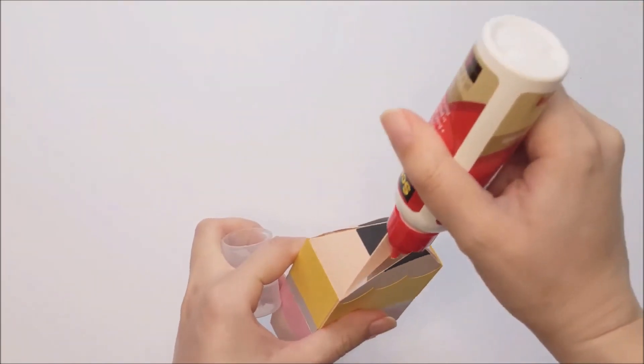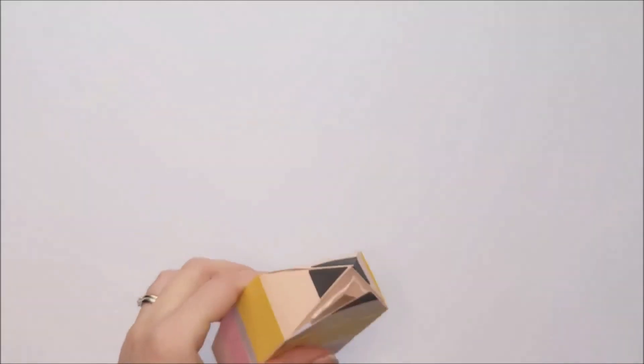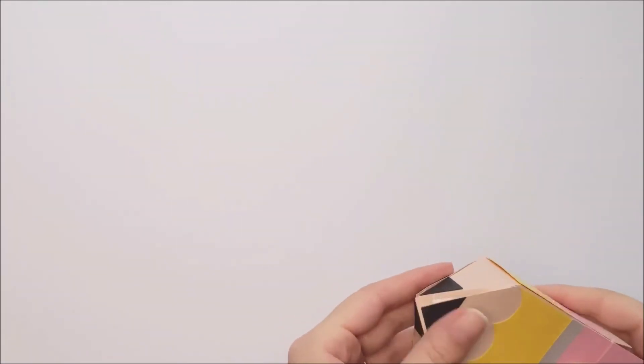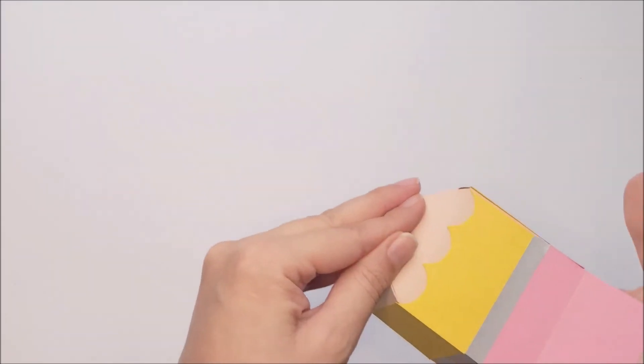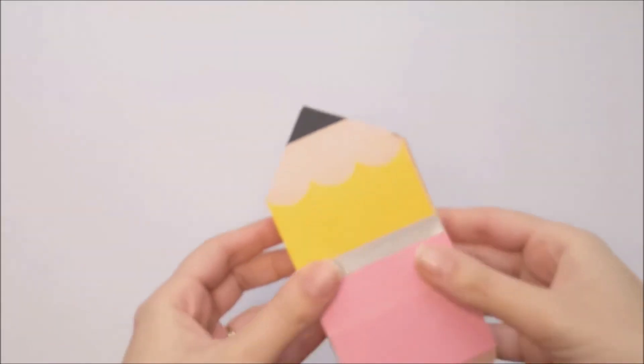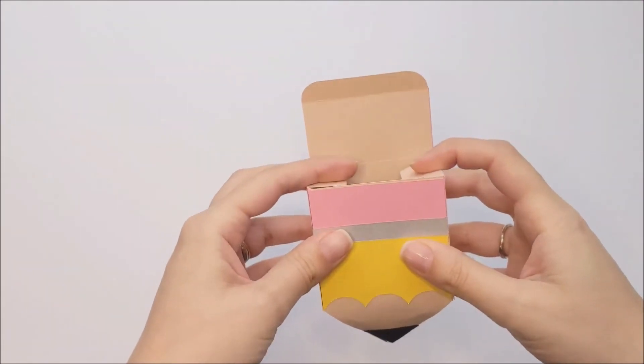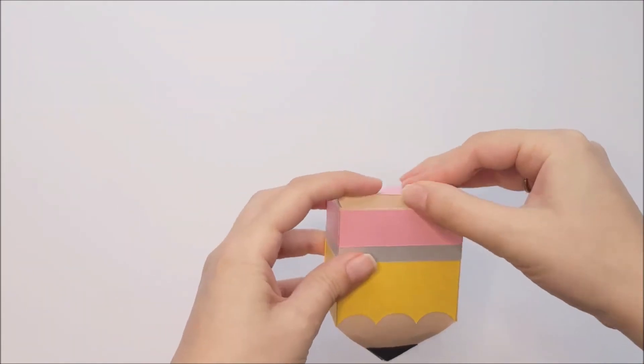And then you're going to repeat the process with the other side. Once the glue is dry, to close the box, you're going to fold down the flaps at the bottom and then close the lid.